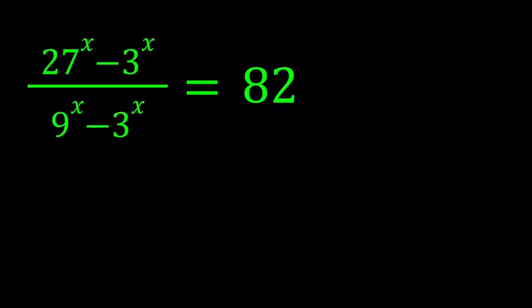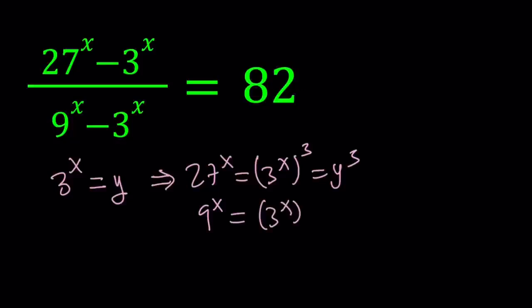So I'm going to use substitution. First of all, notice that we have 3 to the x, 9 to the x. So those are powers of 3 to the power x and 27 to the power x as well. So it makes sense if we call this something. 3 to the power x equals y. This implies 27 to the power x equals 3 to the power x cubed, which is y cubed. And 9 to the power x equals 3 to the power x squared, which is y squared.